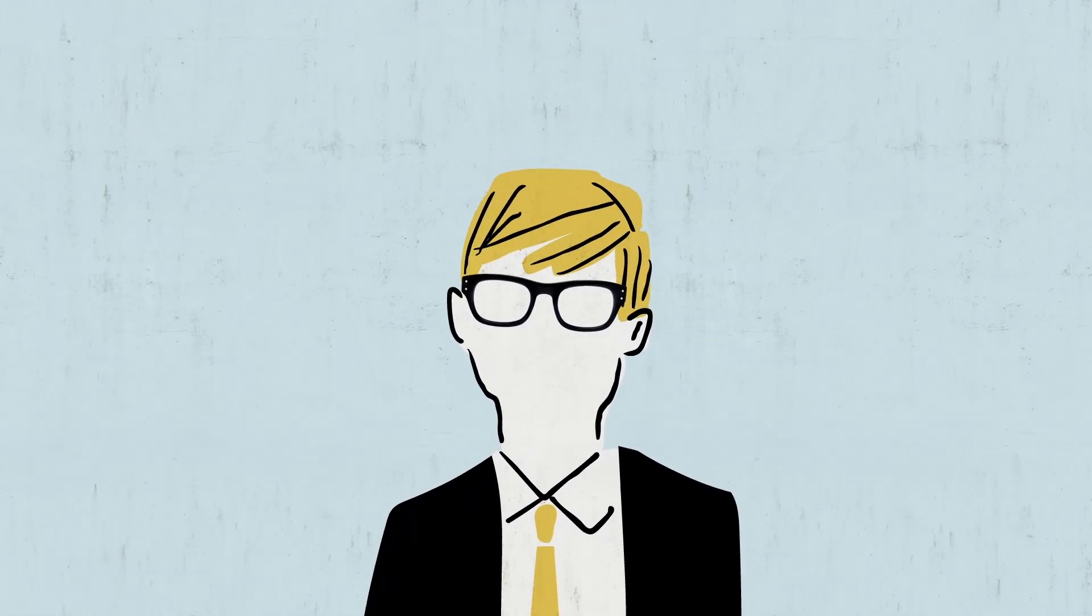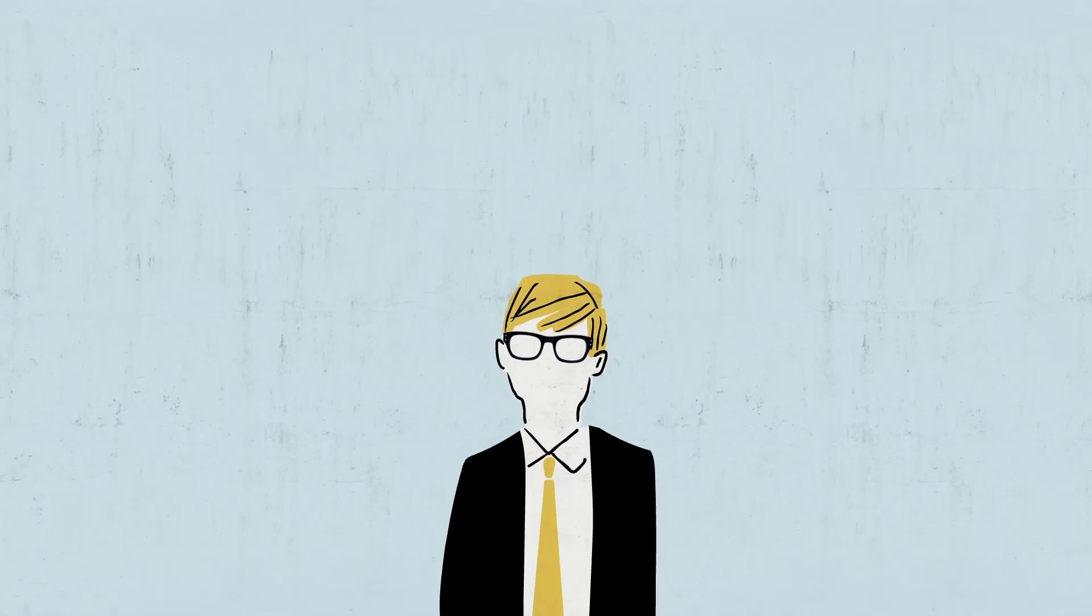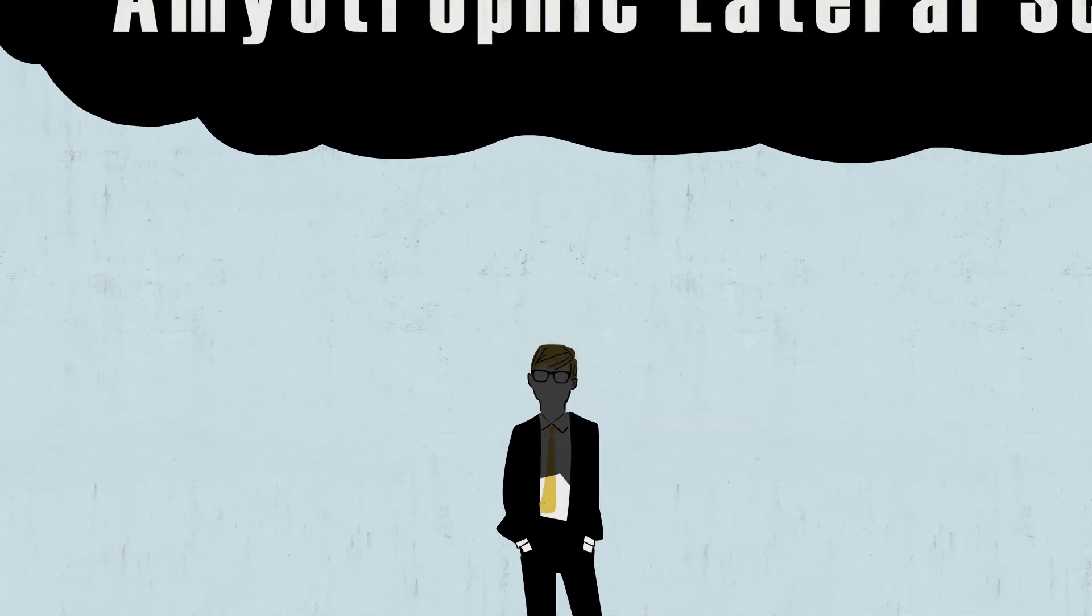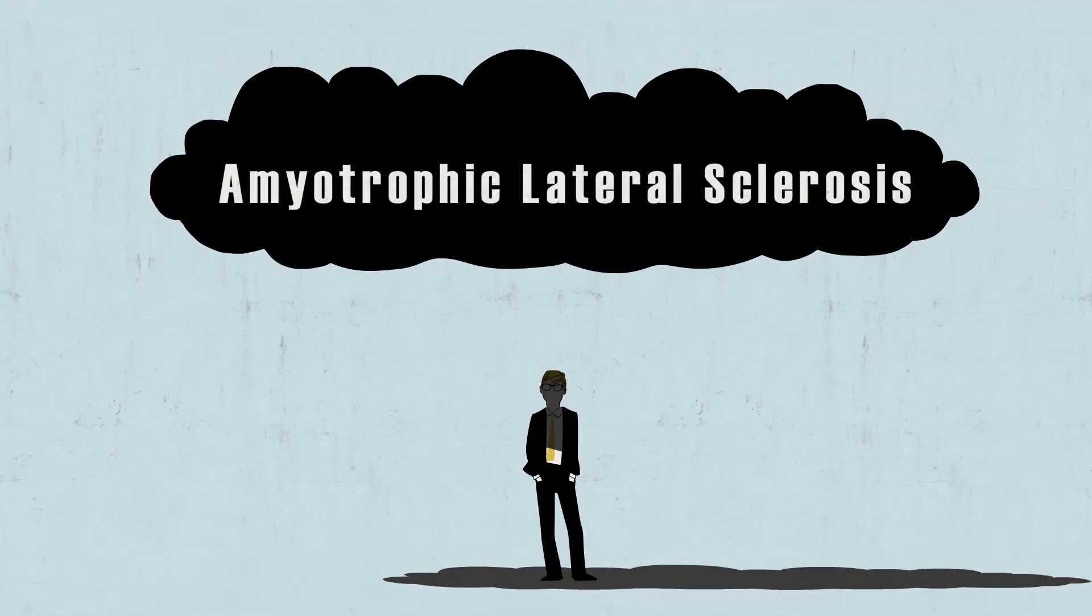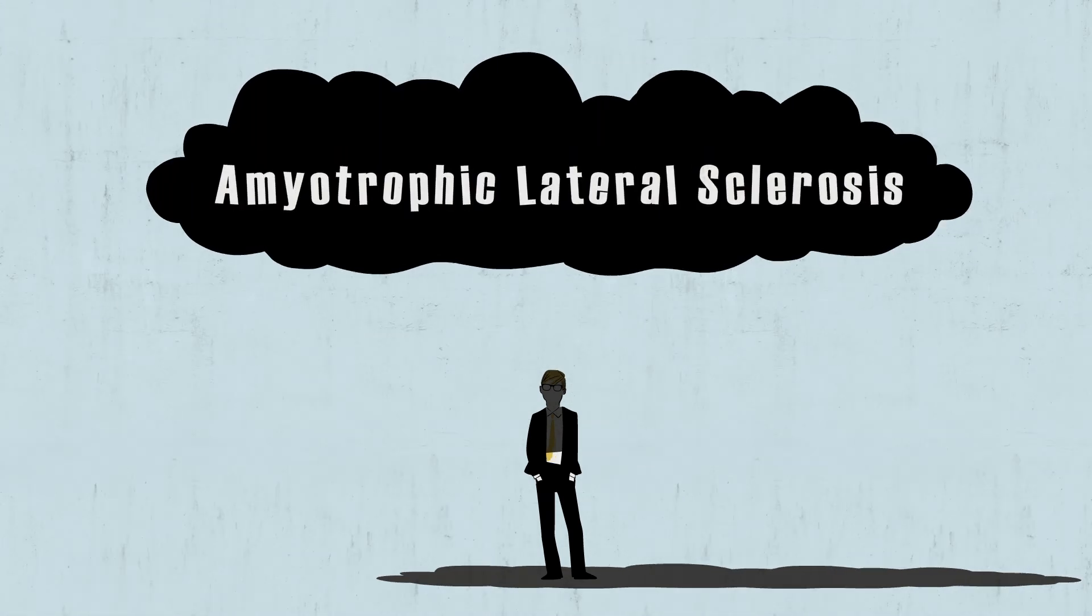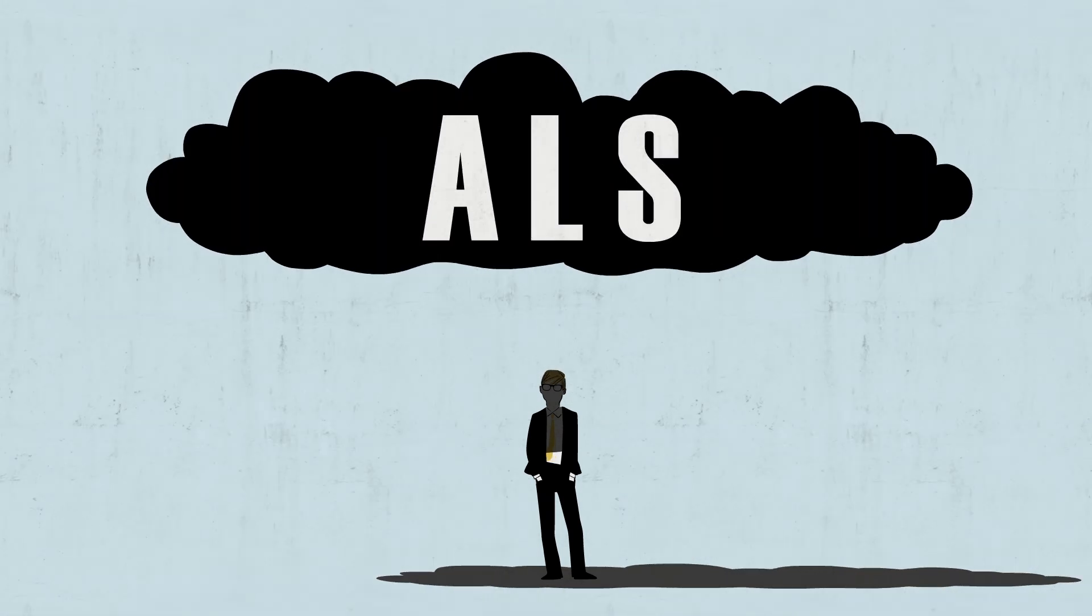In 1963, a 21-year-old physicist named Stephen Hawking was diagnosed with a rare neuromuscular disorder called amyotrophic lateral sclerosis, or ALS.